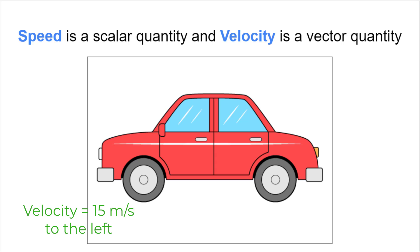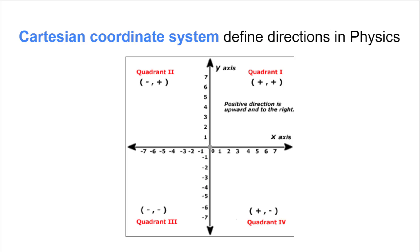This difference between speed and velocity will appear again in topic two. Since vector quantities have a direction, we must always take into consideration the direction of the quantity in our calculations. Physicists use the Cartesian coordinate system to help define directions in space. Up is positive, down is negative, to the right is positive, and to the left is negative.